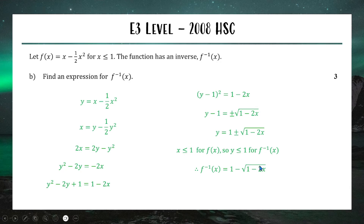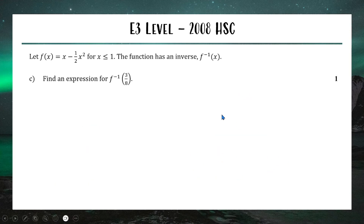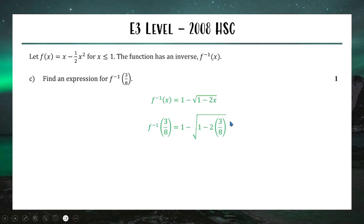Part c — find the inverse function evaluated at 3/8, worth one mark. If you've correctly found the inverse in part b, just substitute x = 3/8. Inside the square root: 1 − 2(3/8) = 1 − 6/8 = 2/8 = 1/4. The square root of 1/4 is 1/2, so f⁻¹(3/8) = 1 − 1/2 = 1/2. If you got part b wrong, it's very hard to pick up this mark.